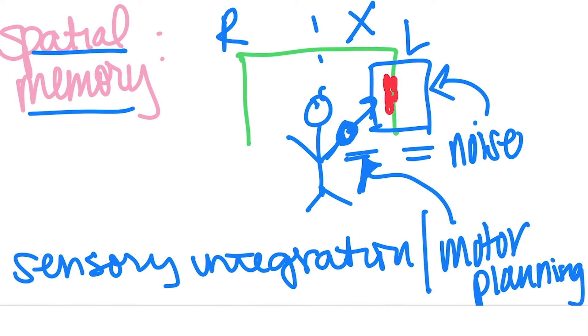The sensory integration piece would be the noise going back into the auditory section, the brain realizing, okay, I like that noise or I don't like that noise, and then being able to kind of understand what that noise is and then also just tolerate it.